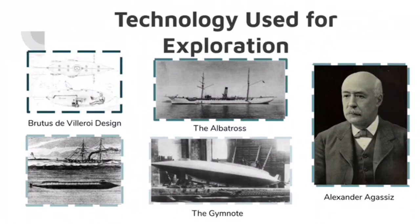In 1882, the United States built the first vessel to be used specifically for oceanographic research. They called it the Albatross. The Albatross was a major aid for marine research and was used for nearly 40 years before it was decommissioned in 1921.